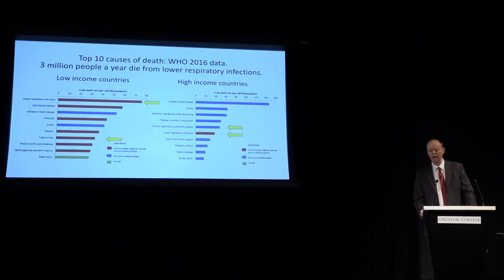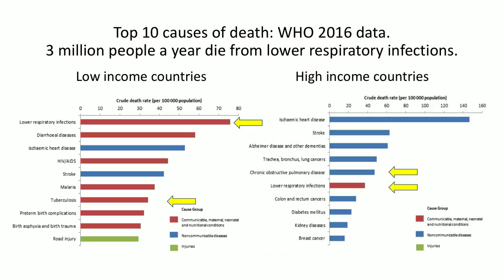Looking around the world, lower respiratory tract infections are in the top 10 causes of death everywhere. In the poorest parts of the world, it is by some distance the number one killer, particularly of children. Tuberculosis is another major cause of lung disease. Even in the highest income settings, lower respiratory tract infections are still in the top 10 causes of death. You also have chronic obstructive airways disease, a smoking-driven disease group.